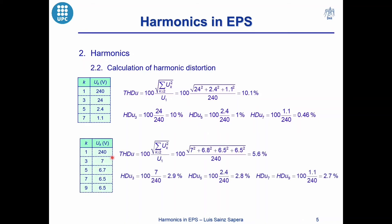Now imagine the following harmonic spectrum: the individual harmonic distortions are all below 5%, so they show that the level of each harmonic is acceptable. But the total harmonic distortion indicates that we have a globally distorted waveform. This is due to the contribution of each harmonic. As a conclusion, we can have a distorted waveform due to a specific harmonic or due to the combined contribution of all harmonics.